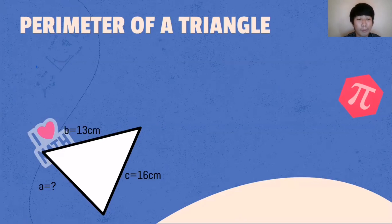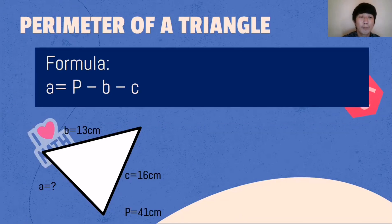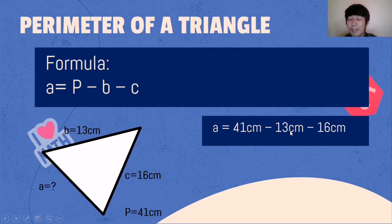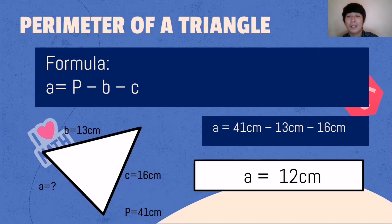Next, what if side A is missing? Given: side B is 13 centimeters, side C is 16 centimeters, and the perimeter is 41 centimeters. The formula will be: A = P − B − C. So 41 minus 13 is 28 centimeters, minus 16 is 12 centimeters. Side A is 12 centimeters.